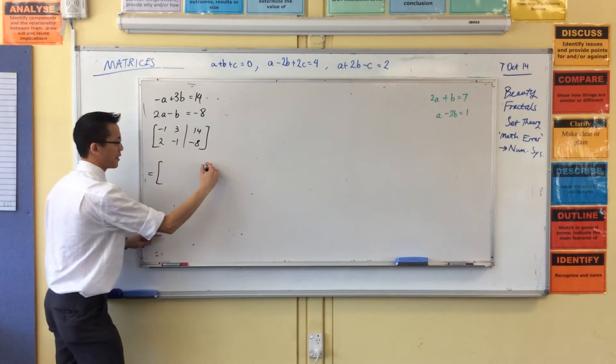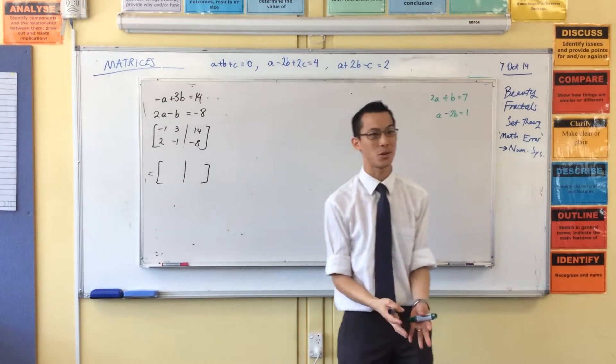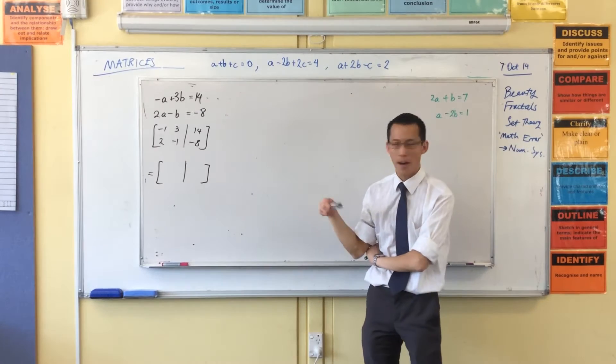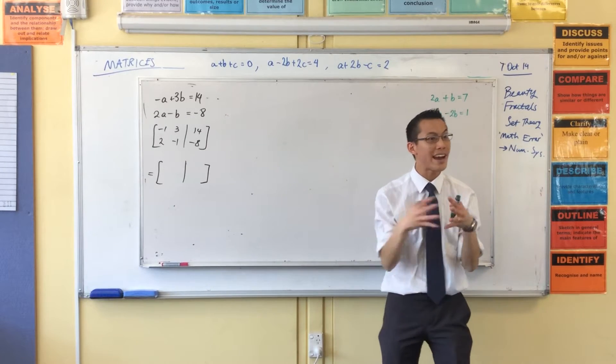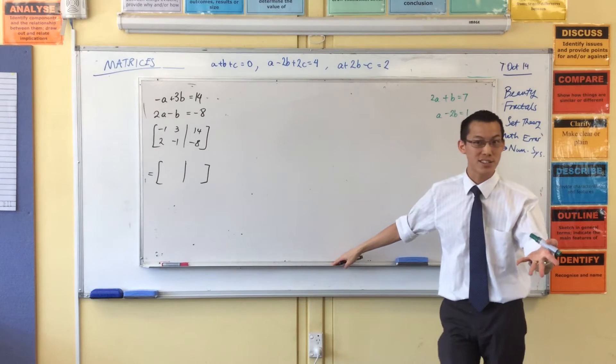And now the arithmetic begins. So you need to make some choices, just like you do with normal simultaneous equations, as to what might be the most logical thing to do to modify these rows so they play nicely together and cancel things out. Because that's what I want in the end. So, a suggestion. Anyone?